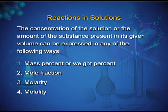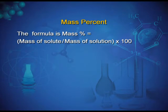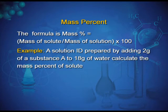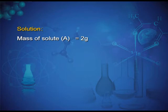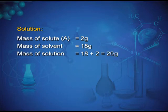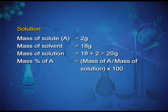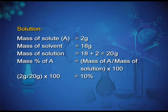The first is mass percent. The formula is: mass percent = (mass of solute / mass of solution) × 100. Example: a solution is prepared by adding 2 g of substance A to 18 g of water — calculate the mass percentage of the solute. Mass of solute = 2 g, mass of solvent = 18 g, mass of solution = 18 + 2 = 20 g. Therefore, mass percentage of A = (2 / 20) × 100 = 10%.